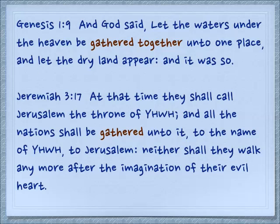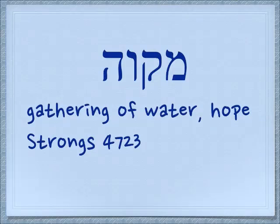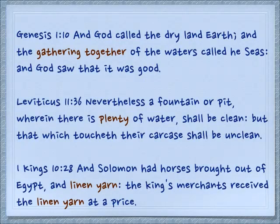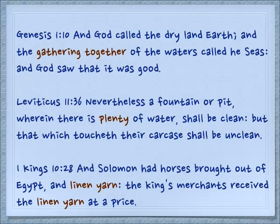We have learned that a mem can be a prefix to make a noun, and this gives us 'mikveh.' It means a gathering of water, but it also means hope. Genesis 1:10 — 'And God called the dry land earth, and the gathering together of the waters he called seas, and God saw that it was good.' Leviticus 11:36 — 'Nevertheless a fountain or pit wherein there is plenty of water shall be clean, but that which touches their carcass shall be unclean.'